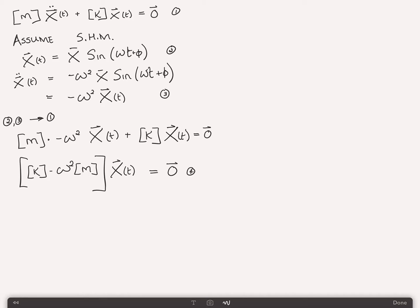Now it follows from equation 4, that for non-trivial solutions, x of t can't be 0. For non-trivial solutions, x of t is not equal to 0. Well, if x of t is not equal to 0, and equation 4 is always equal to 0, then what multiplies x of t must be 0. But since we're dealing with a matrix, we don't say the matrix is 0, but rather the determinant of that matrix is equal to 0. So it follows from equation 4, that the determinant of k minus omega squared m equals 0, and this is now 0 scalar, not a vector.